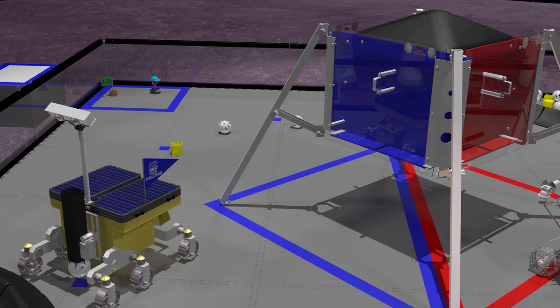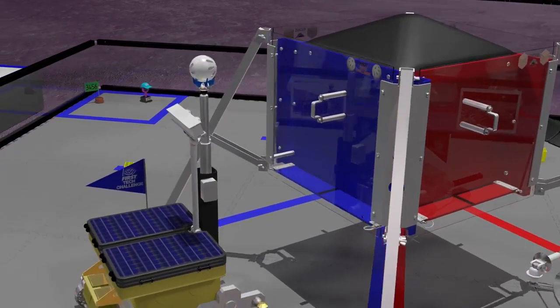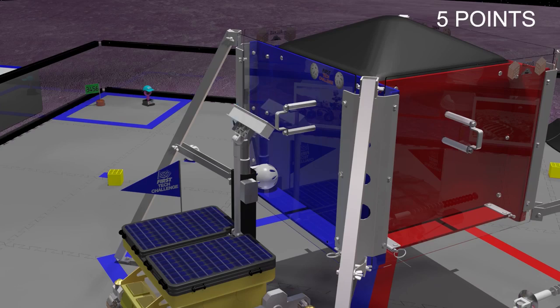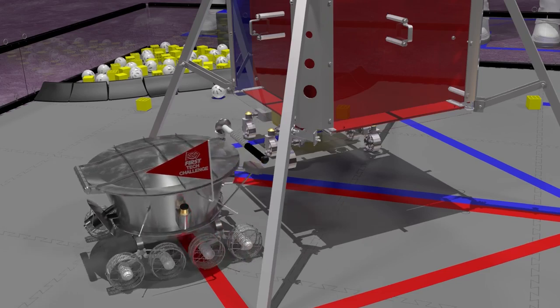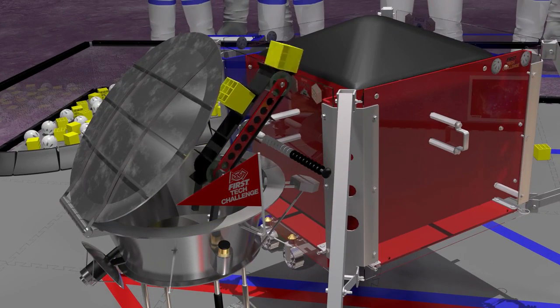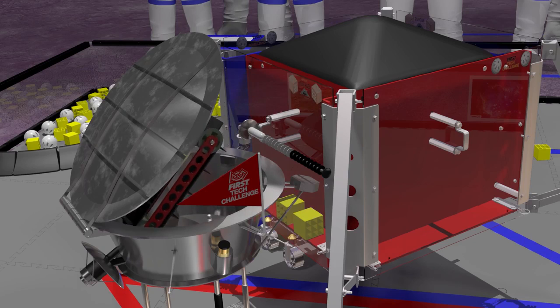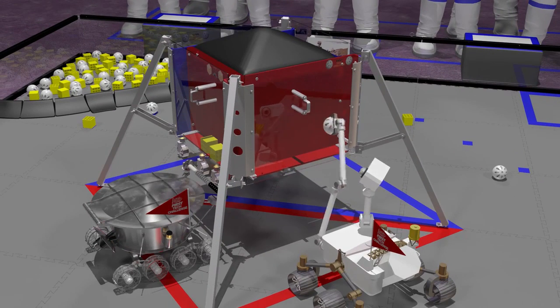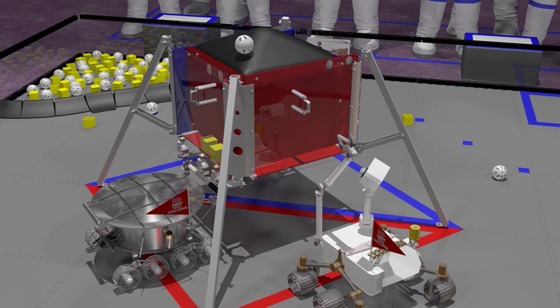Robots that successfully place silver minerals into the silver cargo hold earn five points each for their alliance. Robots that place gold minerals into the gold cargo hold also earn five points each for their alliance. But placing minerals into the incorrect cargo hold will not earn any points.